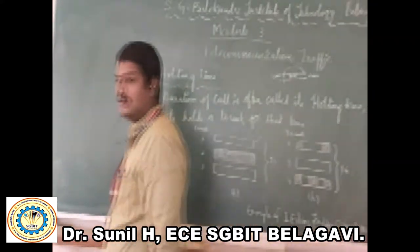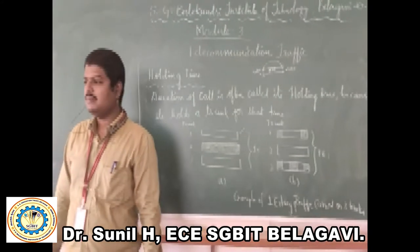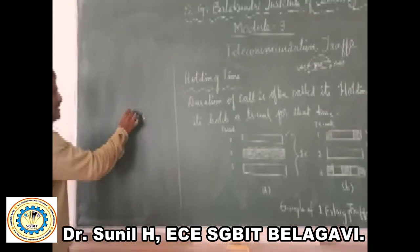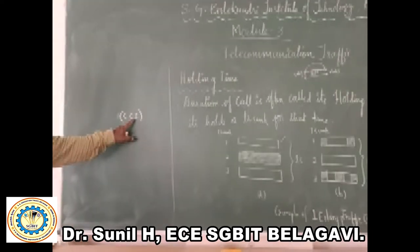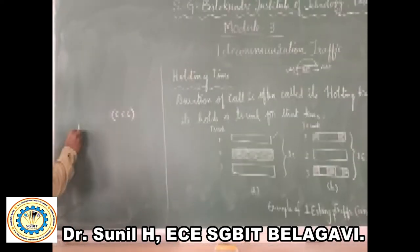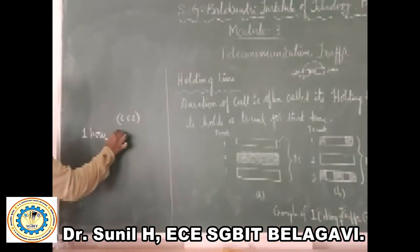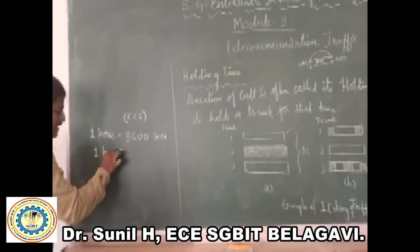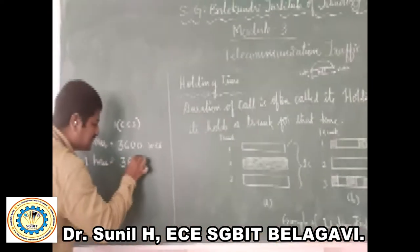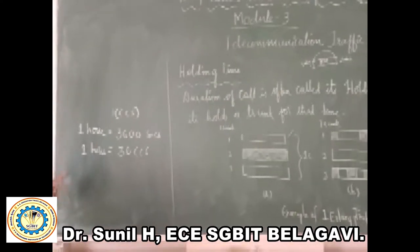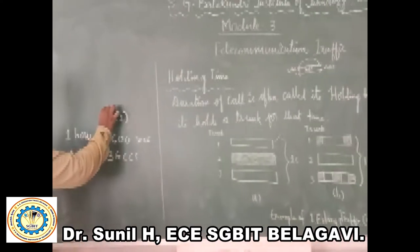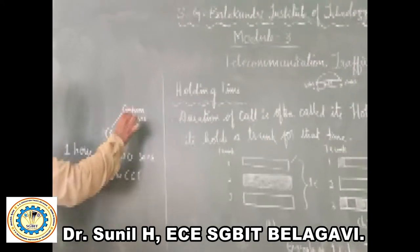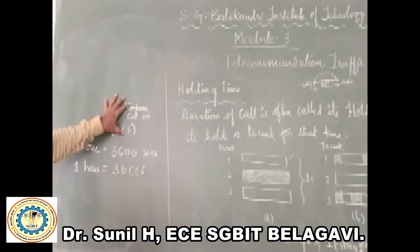In North America, traffic is expressed in terms of CCS — Centum Call Seconds. One Erlang equals 3,600 seconds, which can be represented as 36 CCS according to North American telephonic exchange specifications, where C stands for centum, meaning 100.